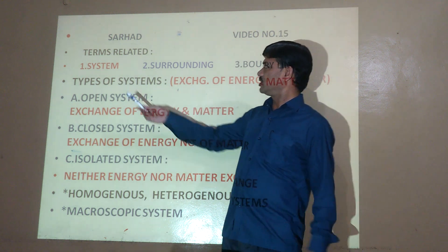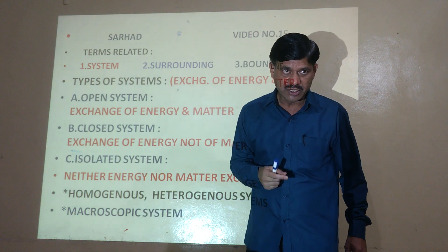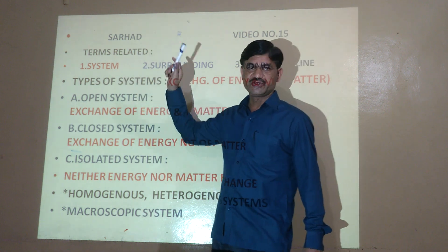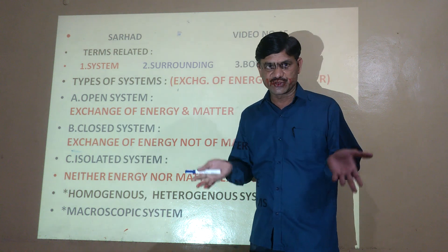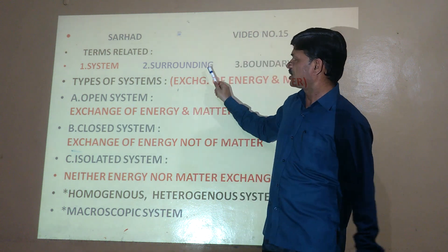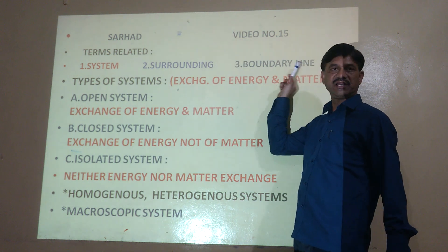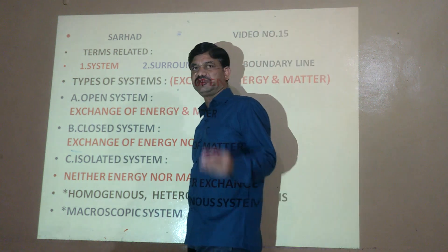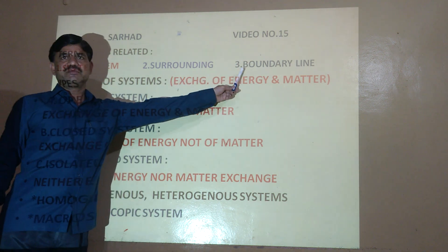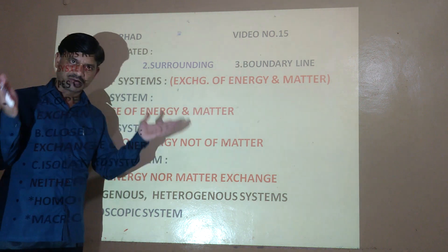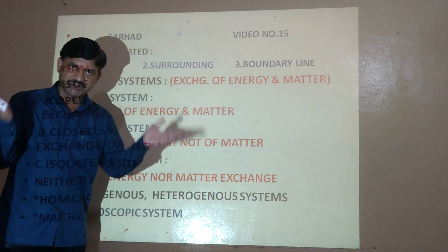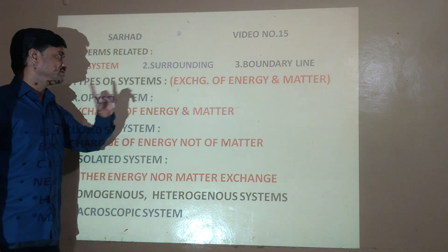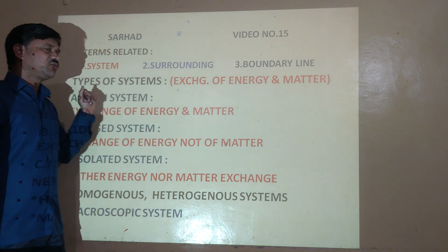In thermodynamics, the system is that part or portion of the universe which is selected for experimental study. The surrounding is everything other than the system — the remaining part of the universe. The third important term is the boundary line: it is a real or imaginary line that separates the system from the surrounding.